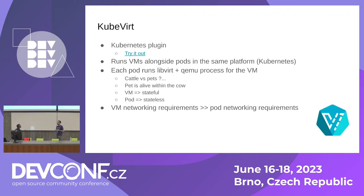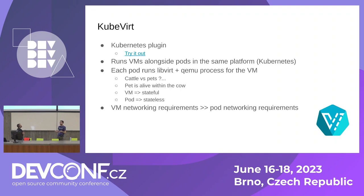So the first thing: we're going to introduce KubeVirt. KubeVirt is a Kubernetes plugin. It allows you to run virtual machines and pods on the same platform. It essentially runs a libvirt and KubeVirt process inside of a pod. The tricky thing is, if you spend a few seconds to think about this, you have a virtual machine — which is inherently a stateful entity — scheduled and running inside of a pod, which is essentially a stateless entity on the cluster.